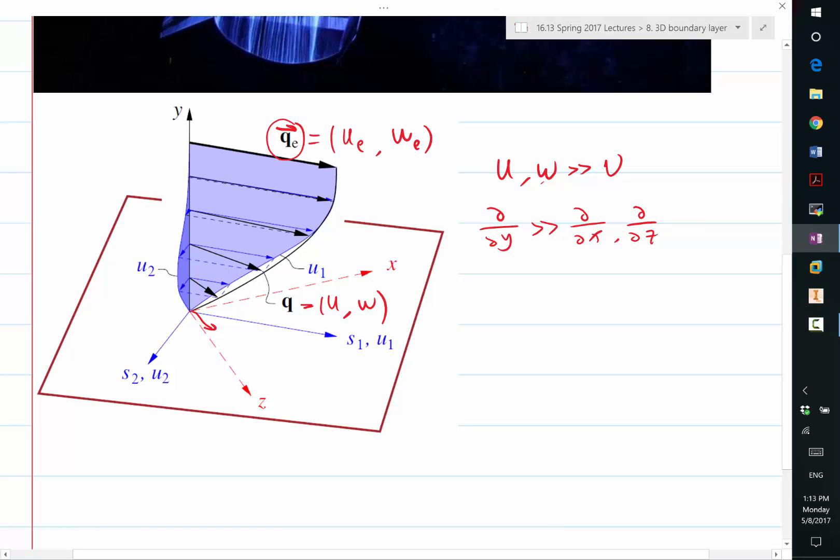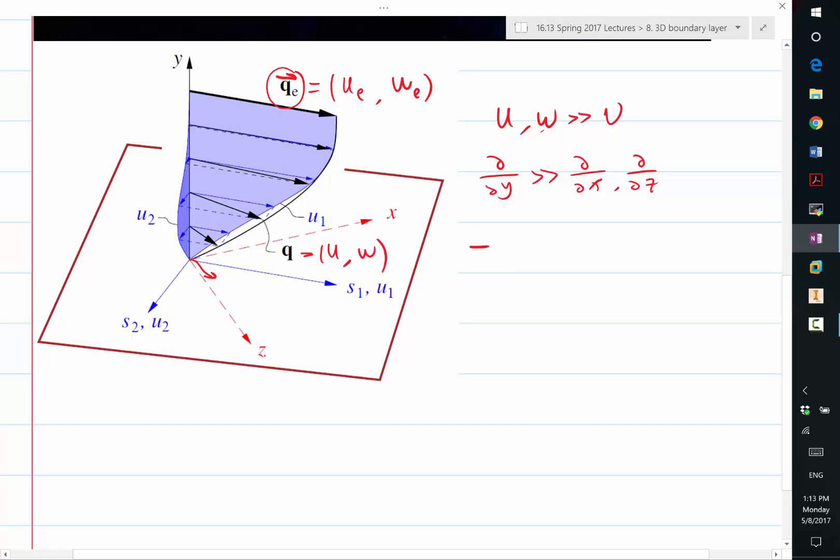Under these assumptions, we can write down a very similar set of equations that describes the flow inside the boundary layer. So the thin layer approximation in 3D. We still have our partial u, partial x, plus partial v, partial y, but now plus partial w, partial z equal to 0. That's our mass conservation.